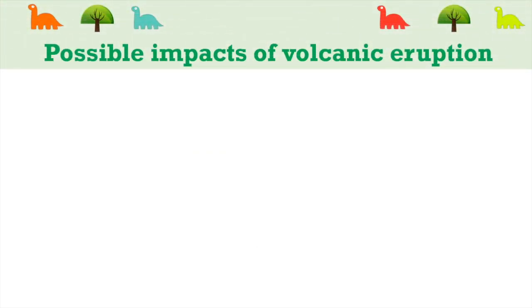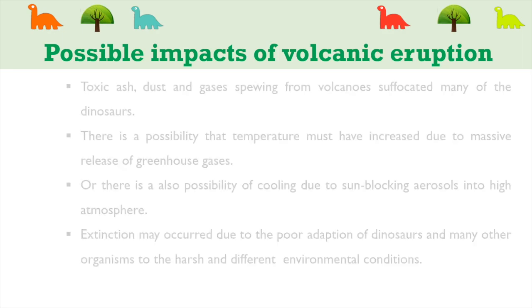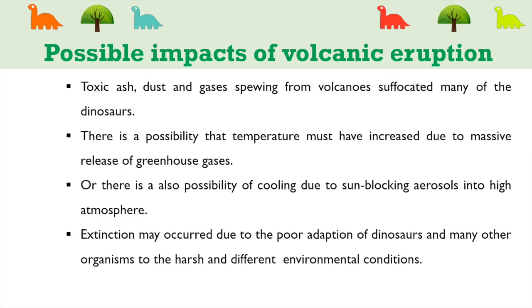Let's study the possible impacts of volcanic eruption on dinosaurs. Toxic ash, dust, and gases spewing from volcanoes suffocated many dinosaurs. There is a possibility that temperature increased due to massive release of greenhouse gases, or alternatively there was cooling due to sun-blocking aerosols entering the high atmosphere. Extinction may have occurred due to the poor adaptation of dinosaurs and many other organisms to these harsh environmental conditions.